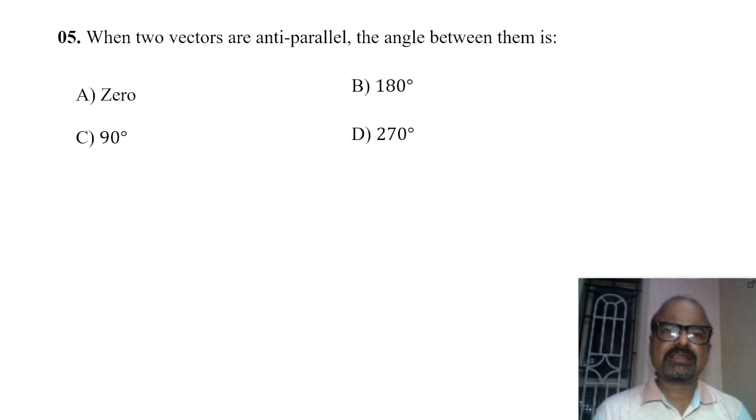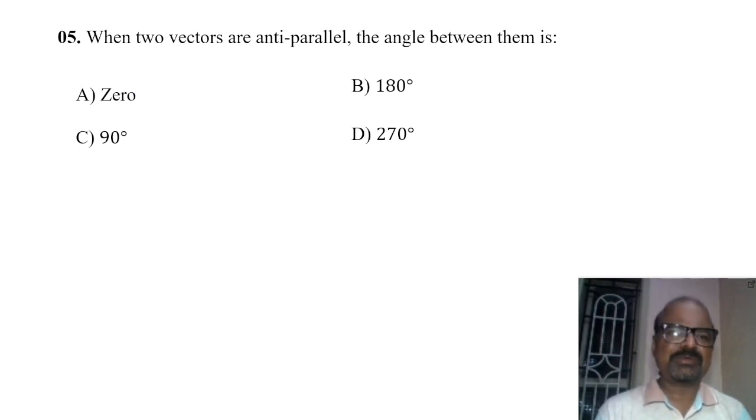Next, when two vectors are anti-parallel, the angle between them is 180 degrees.